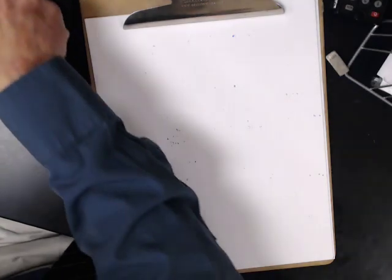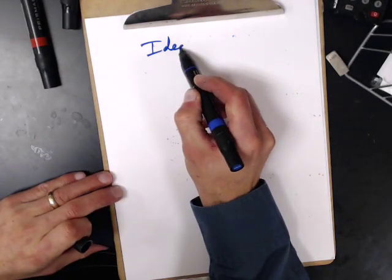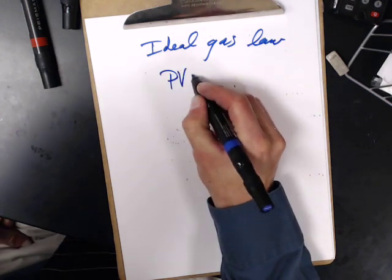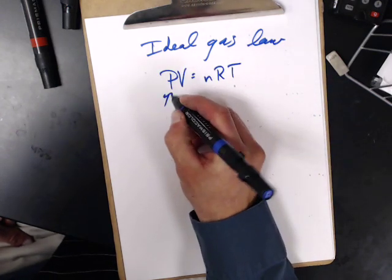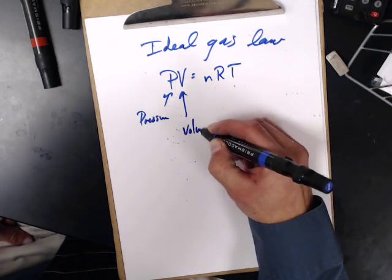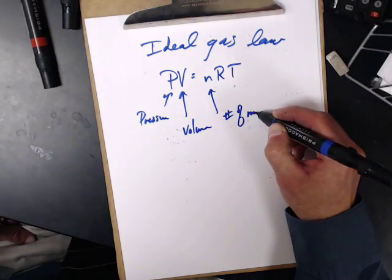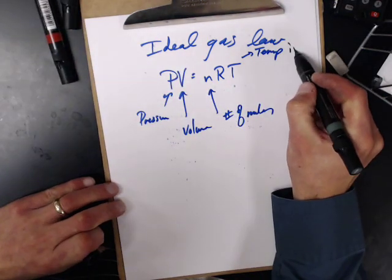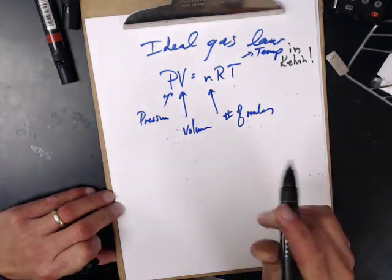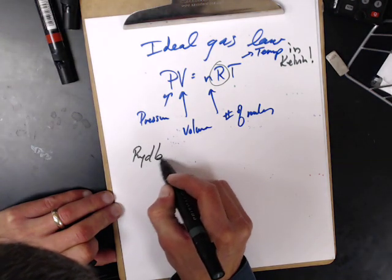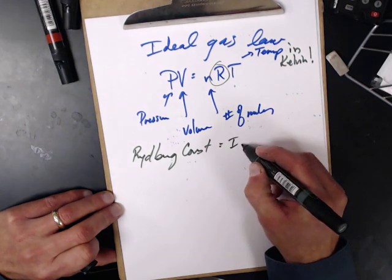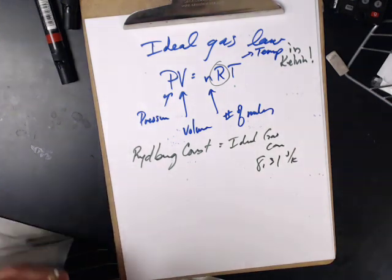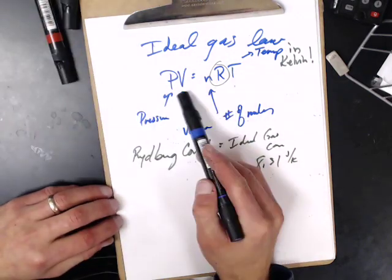Now, finally, let's take a look at the ideal gas law. The ideal gas law is PV equals NRT where P is pressure, V is volume, N is the number of moles, T is the temperature in Kelvins, and then R is the Rydberg constant, also called the ideal gas constant, which is 8.31 joules per Kelvin.